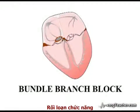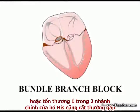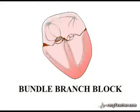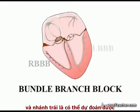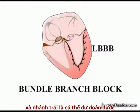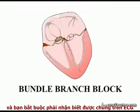Isolated dysfunction or damage of either of the main branches of the bundle of His is commonly observed. The pattern of ECG changes associated with right or left bundle branch block are broadly predictable, and you must be able to recognise them on the ECG.